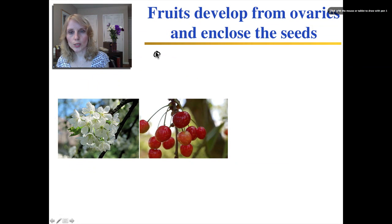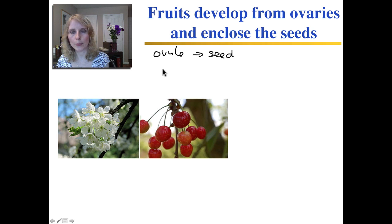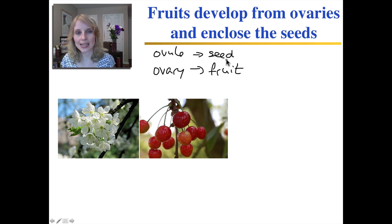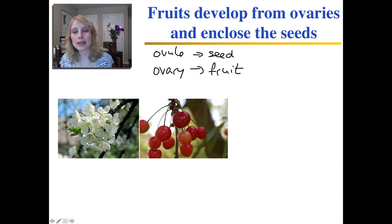The ovules develop into the seeds, and inside each seed is a developing embryo. Remember, the ovules are inside an ovary, and the ovary develops into the fruit. So each ovary has one or more ovules, and then it becomes the fruit, which has one or more seeds inside. You can see this with the cherries — each cherry flower has the carpel with its ovary, and inside the ovary is a single ovule. That ovule becomes the seed and the rest of the ovary becomes the cherry fruit that surrounds the seed.